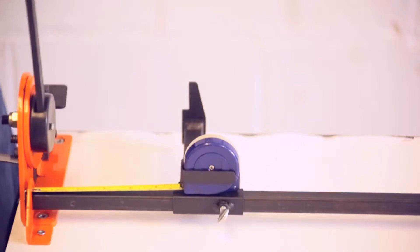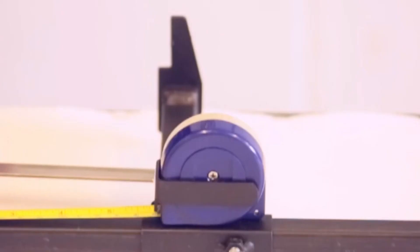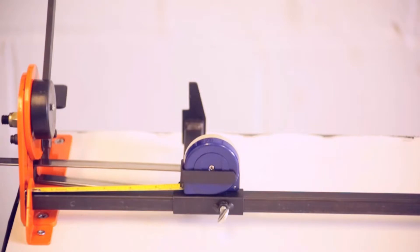Once your required length is set, place the steel strip up against the stop and cut. This will give precise and consistent cuts, time and time again.